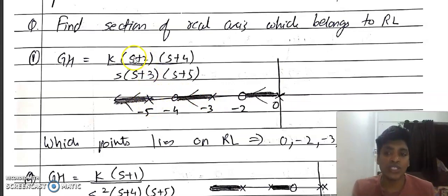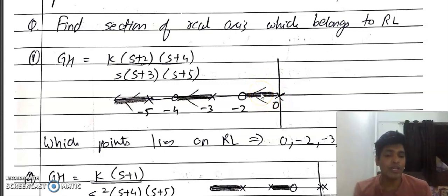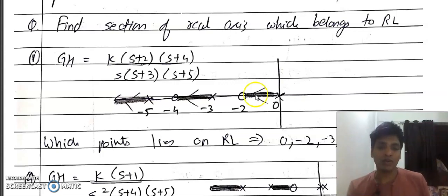Moving between −2 and −3: to the right there are 2 total poles and zeros — two is even, so root locus does not lie here. Between −3 and −4: to the right there are 3 poles and zeros — three is odd, so this section lies on the root locus and is shaded. Between −4 and −5: to the right there are 4 — even, so root locus does not lie here.